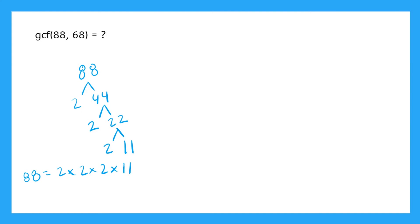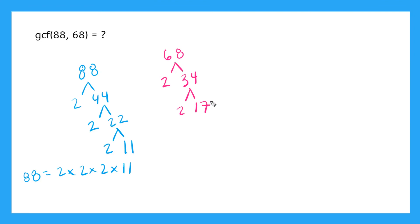Now we can do the same thing for 68. For our tree here we have 2 and 34, and 34 gives us 2 and 17, and that's it because 17 is also a prime number. So for 68 we have 2 times 2 times 17.